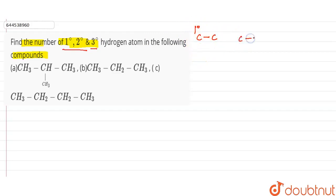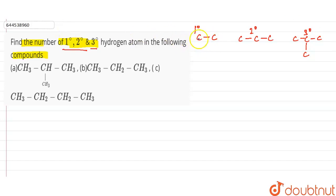When a carbon is attached to two other carbon atoms, it is called a 2-degree carbon. When it is attached to three carbon atoms, it is called a 3-degree carbon. The hydrogens attached to these carbon atoms are called 1-degree, 2-degree, and 3-degree hydrogens respectively.